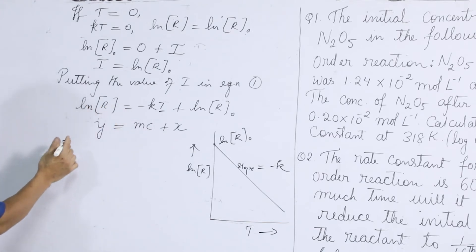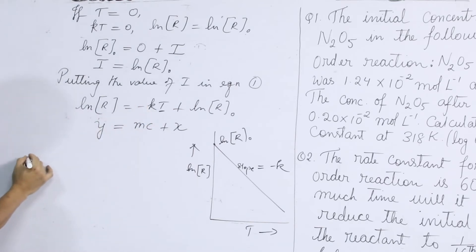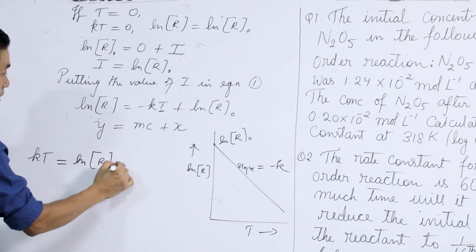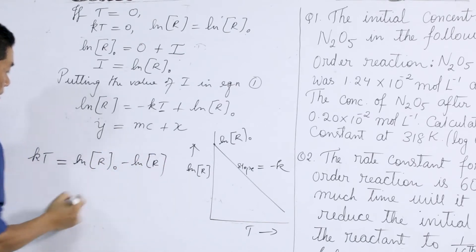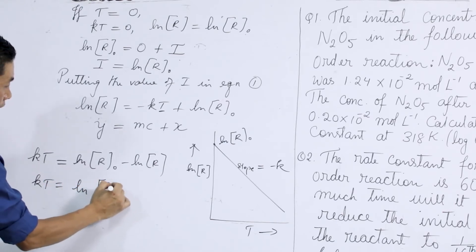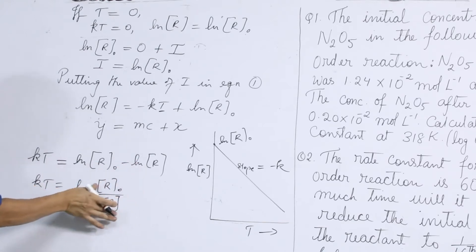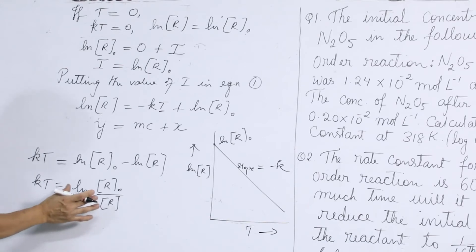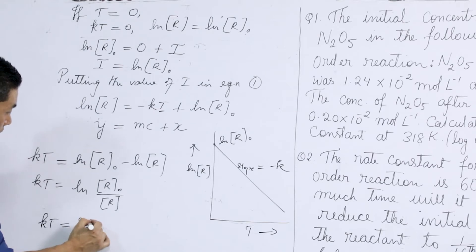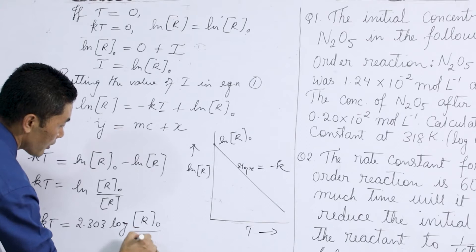Now we have log R equal to minus kt plus log R₀. On rearranging this we will get kt equal to log R₀ minus log R. Therefore kt will be equal to log(R₀/R).